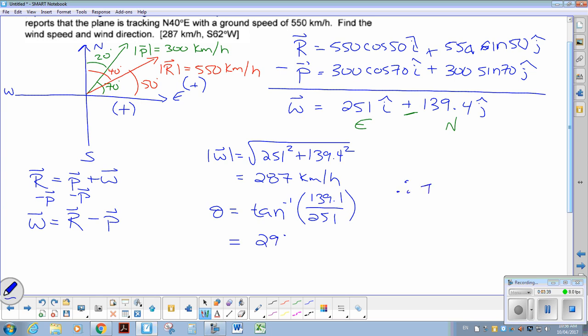So therefore, the wind is 287 kilometers an hour. So that's fairly significant wind. Heading east 29 degrees north for its bearing. If you have any questions with that, let me know. And I will try to clear them up.